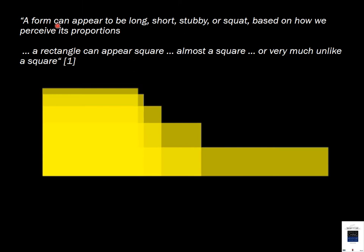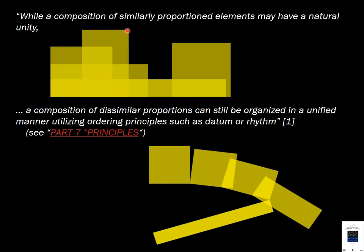A form can appear long, short, stubby, or squat based on how we perceive its proportions. A rectangle can appear square, almost a square, or very much unlike a square. While a composition of similar proportioned elements may have a natural unity, a composition of dissimilar proportions can still be organized using ordered principles such as datum or rhythm, which we'll see more of in Part 7.